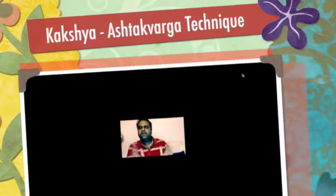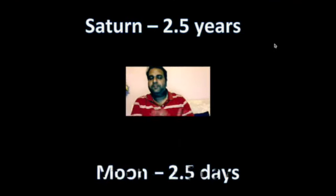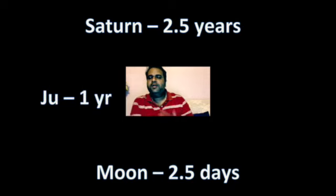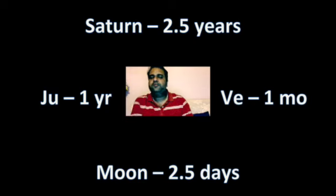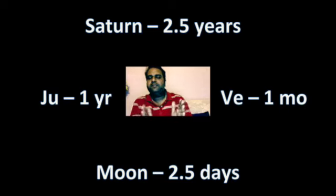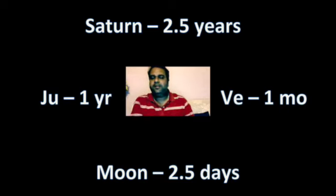The time of transit varies greatly between planets. For Saturn it could be as large as two and a half years in one sign, while for the Moon it could be as small as two and a half days. So it becomes very difficult to pinpoint a particular event based on just the transit.